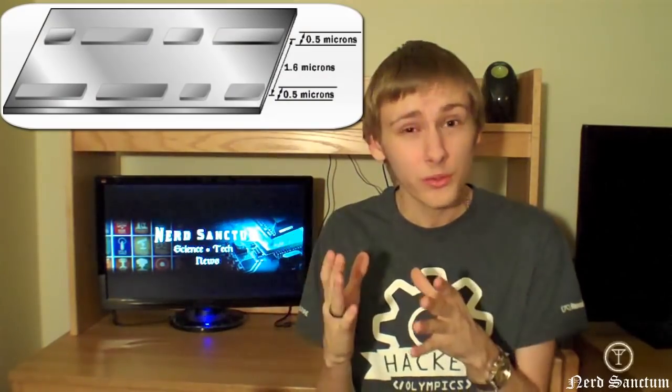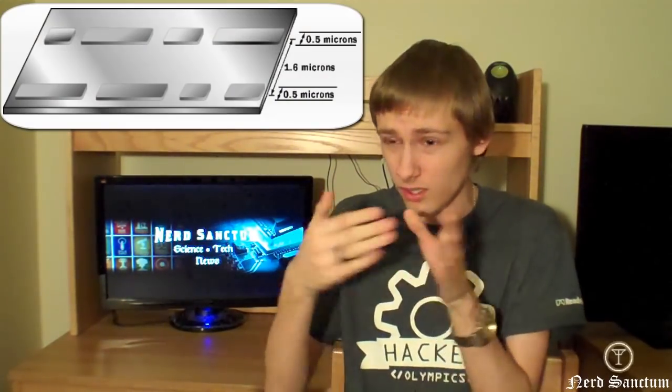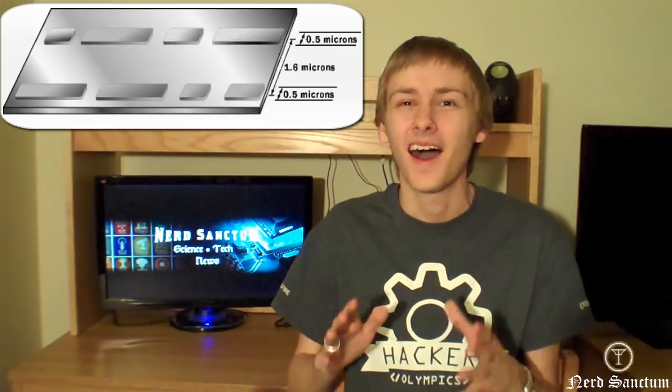Let's talk about the general structure of how we store data onto these discs. Imagine a single line or track that starts at the center of the disc and spirals outwards towards the outer portion. We have one spiral that contains all the data on a particular disc, storing it as a series of flat spots or bumps. If we straightened out the spiral into a straight line, it would actually be about 3.5 miles long.